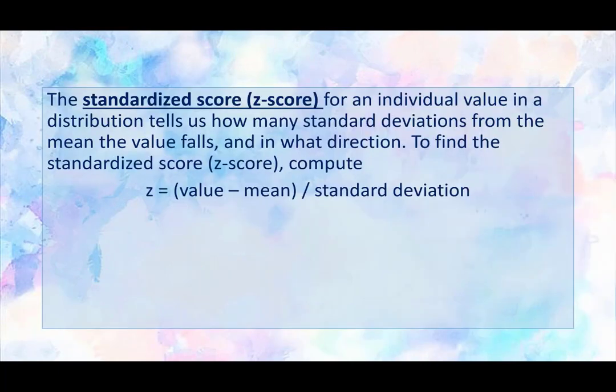Okay. So let's talk about one other way to measure location in a distribution, and that is with the standardized score or the z-score. This is going to come up in so many other units, so it's really important to kind of get a head start on this. The standardized score for an individual value in a distribution tells us how many standard deviations from the mean a value falls, and in what direction. To find the standardized z-score, we're going to compute that z equals the value minus the mean divided by the standard deviation. You can also see that as x minus μ over sx. These are all just different symbols for mean and standard deviation.